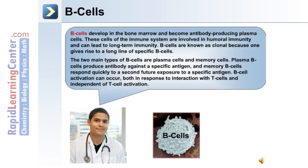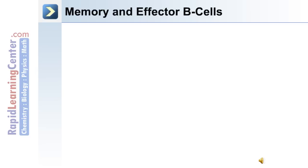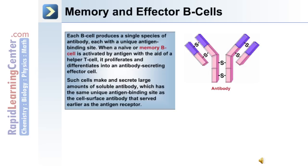The activation of B cells can occur both in response to interaction with T cells and independent of T cell activation. Each B cell produces a single species of antibody, each with a unique antigen binding site. When a naive or memory B cell is activated by antigen with the aid of a helper T cell, it proliferates and differentiates into an antibody-secreting effector cell. Such cells make large amounts of soluble antibody, which has the same unique antigen binding site as the cell surface antibody receptor that served earlier as the antigen receptor.